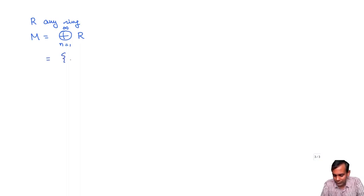What this is, is it's the space of all sequences R_n, n goes from 1 to infinity. So it's like sequences R1, R2, R3, such that R_n is equal to 0 for all but finitely many values.